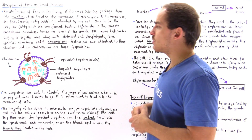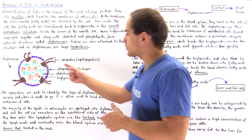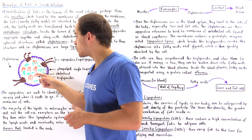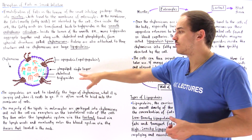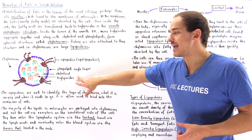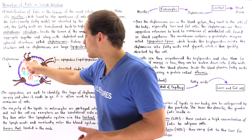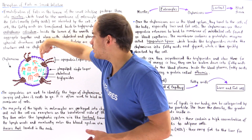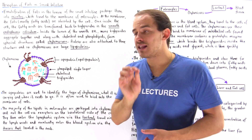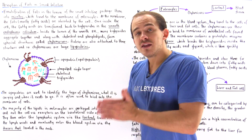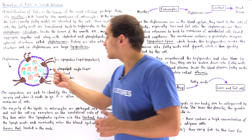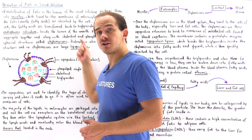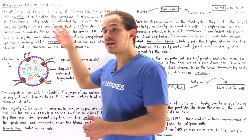This is what the chylomicron actually looks like. Inside, in the core, at the center, we have thousands of cholesterol and triglyceride molecules, as shown in green and orange. We also have a single layer of phospholipids that protect the hydrophobic core from the hydrophilic solution found in our surrounding environment.